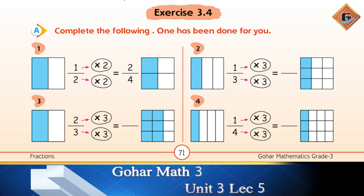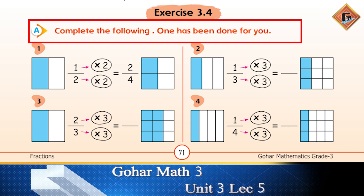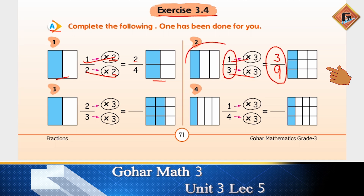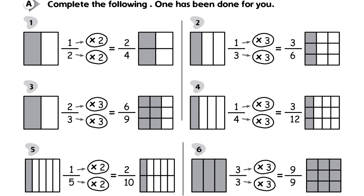We are going to solve Exercise 3.4. The first question says: complete the following — one has been done for you. To find an equivalent fraction, multiply numerator and denominator by the same number. For example, 1×2=2 and 2×2=4, giving 2/4. Both shapes still have half part shaded. For the next one, 1/3: multiply by 3 — 1×3=3 and 3×3=9 — giving 3/9. These are your equivalent fractions. Now do the 3rd and 4th questions by yourself and check your answers from the screen.